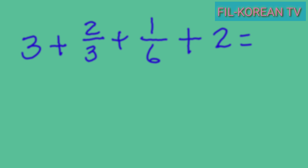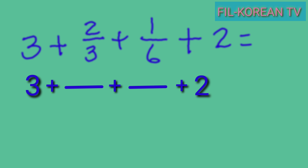For the last example, let's answer this problem: three plus two thirds plus one sixth plus two equals. As you can see, the denominators are not the same, so the first step is to change the fractions to similar fractions by getting the LCD. The LCD of three and six is six. Copy the whole number three and the whole number two, then write the LCD six. Divide the LCD by the denominators and multiply by the numerators to get the new numerators. Six divided by three equals two, two times two equals four. Six divided by six equals one, one times one equals one. The denominators are now the same, so we can add.